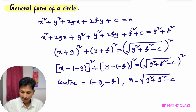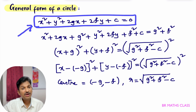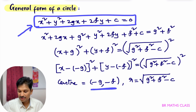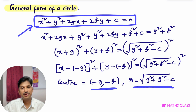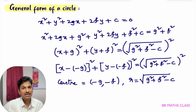So these are the formulas: center is (-g, -f) and radius is √(g² + f² - c). This is the theory part related to circles as per the NCERT textbook for Class 11, Chapter 10.